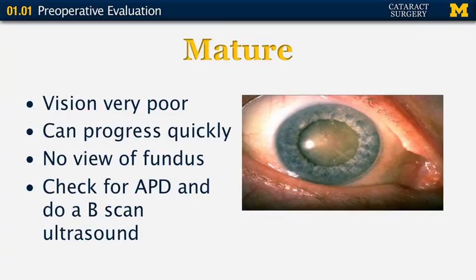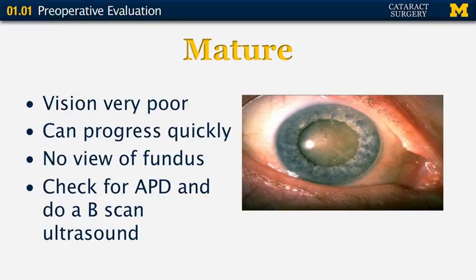We don't see mature cataracts very often in the United States — they are much more common in developing nations. With this type of cataract, the vision is extremely poor. It can progress very quickly from a cortical cataract to a mature lens. As you can see in the photo, there's really no view of the fundus. This eye has to be examined with some other modalities to determine that the back of the eye is okay, and we'll be discussing those later in the talk.